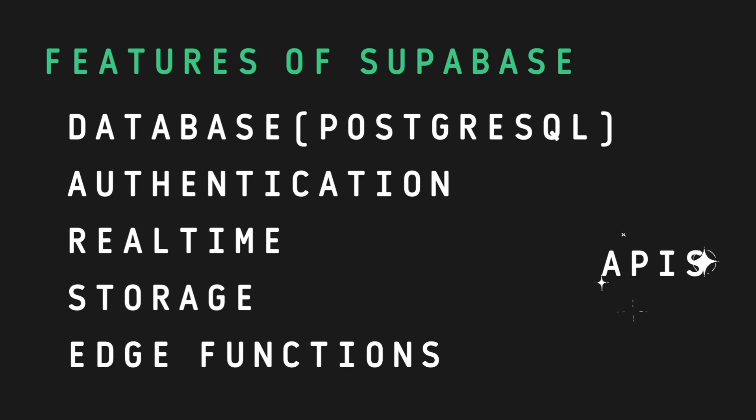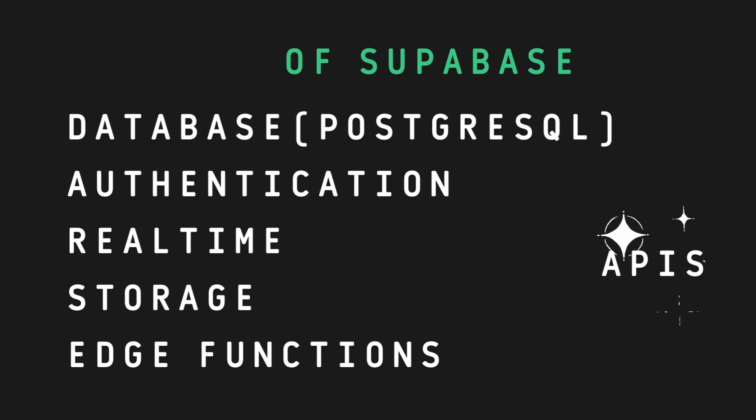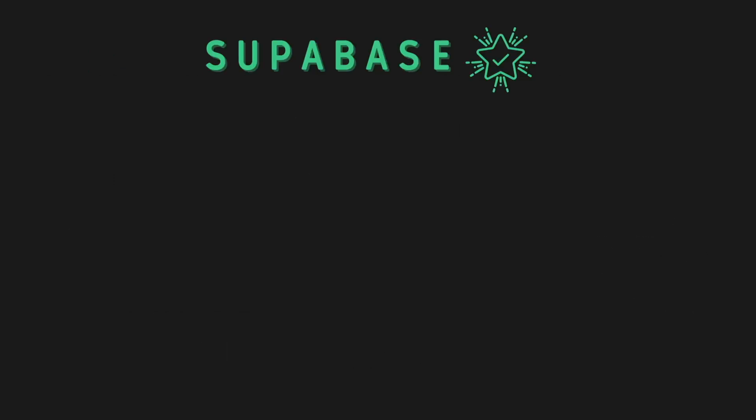Now you might be wondering, how is Superbase different from Firebase, which is another popular backend as a service platform? Well, there are a few key differences that make Superbase a unique choice. First and foremost, Superbase is open source. This means you have full visibility into the code and can even contribute to its development. Firebase, on the other hand, is proprietary software owned by Google.